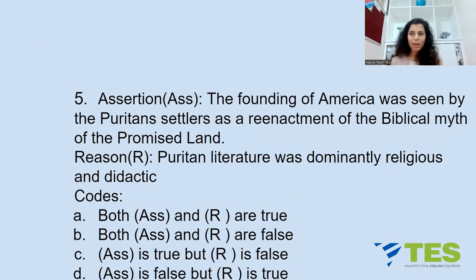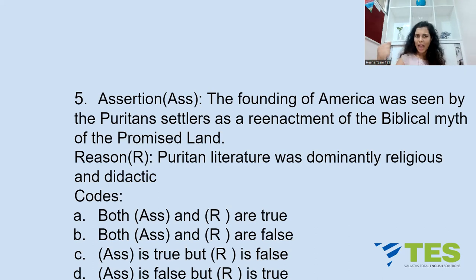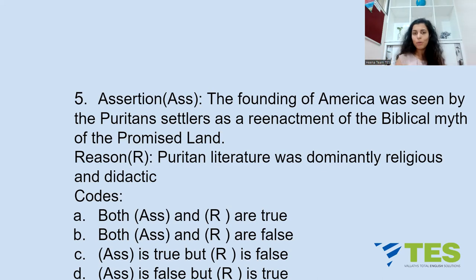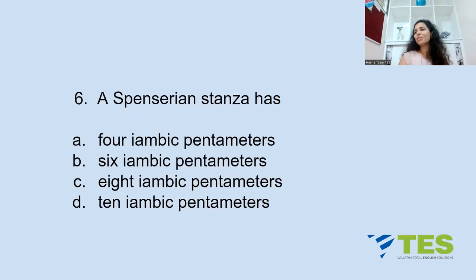Question 5: Assertion and Reason. Assertion: The founding of America was seen by the Puritan settlers as a reenactment of the biblical myth of the promised land — True. Reason: Puritan literature was dominantly religious and didactic — True. Therefore, Option A — both assertion and reason are true — is the answer.